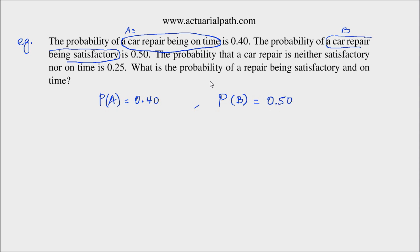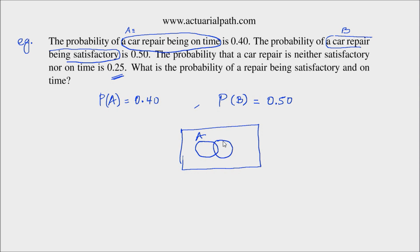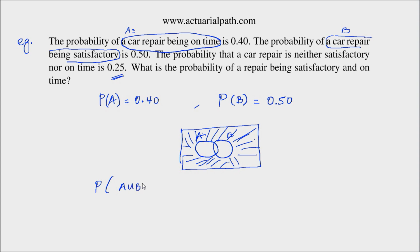The probability that a car repair is neither satisfactory nor on time is 0.25. Neither satisfactory nor on time means it's neither A nor B — it's the event outside of the union of A and B. So the probability of (A union B) complement is 0.25.